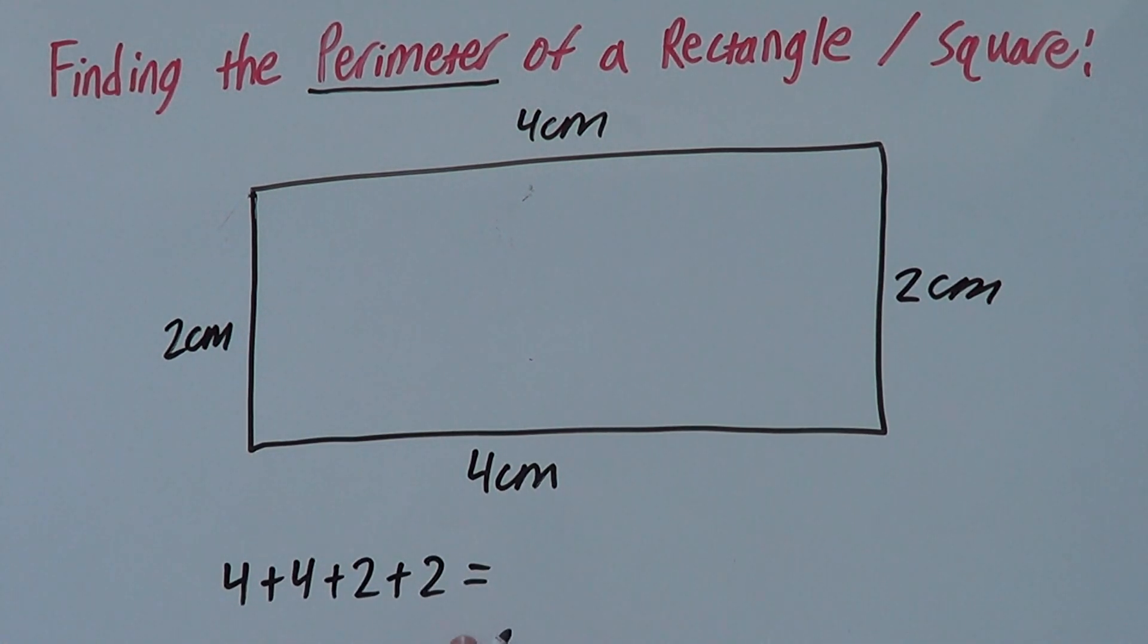And then we add this up. So 4 plus 4 is 8, plus 2 is 10, and plus another 2 is 12.